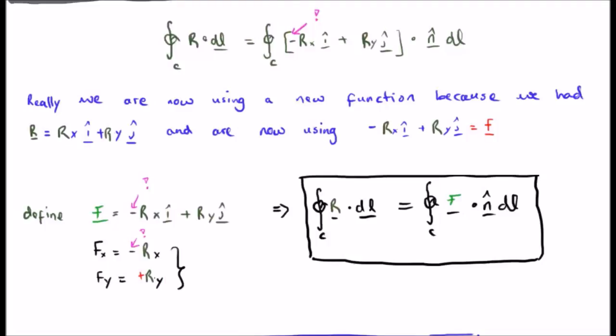If we write it this way, we can rewrite the closed line integral of r·dl as the closed line integral of f dot n-hat dl. I hope you can see the usefulness of bringing in this unit normal, it really simplifies the result.